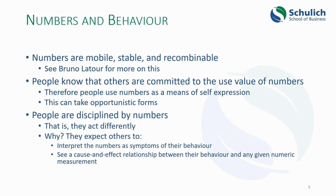If you want to look at how numbers and human behavior are related, a good place to start is with the French social theorist Bruno Latour, who has written a lot about the nature of numbers and how numbers are mobile, stable, and recombinable. By mobile, Latour means that you can transmit numbers much more easily than you can transmit the object they measure. Numbers are stable — the number you send is the number received, they don't decay in transit the way a shipment of fruit would. And numbers are recombinable: you can compare, add, subtract, and do ratios with them to produce more information, as we've already seen in our accounting class.